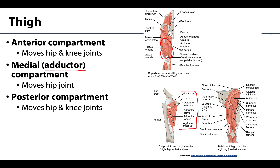The posterior compartment is primarily the hamstring muscles, with a few other muscles or parts of muscles associated. The posterior compartment muscles will move both the hip as well as the knee joint.